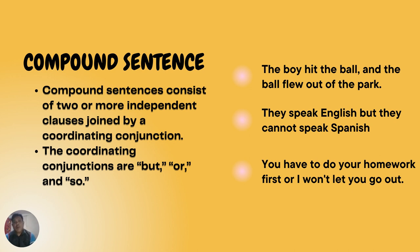We can see from the examples. The first example: 'The boy hit the ball and the ball flew out of the park.' The second example: 'They speak English but they cannot speak Spanish.' The third example: 'You have to do your homework first or I won't let you go out.' In the first example, 'The boy hit the ball' is a single clause continued by the second clause 'The ball flew out of the park,' joined by the coordinating conjunction 'and.'